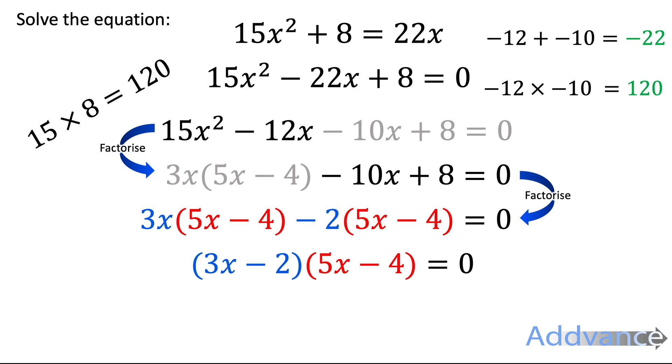However, we're going to use this to solve the equation. And what you have to realise is that this is two brackets multiplied together to make 0. And therefore, to make 0, one of them must be 0. So either the first one is 0 or the second one is 0. 3x minus 2 is 0 or 5x minus 4 is 0. All we have to do is rearrange those equations to find x and we're finished.